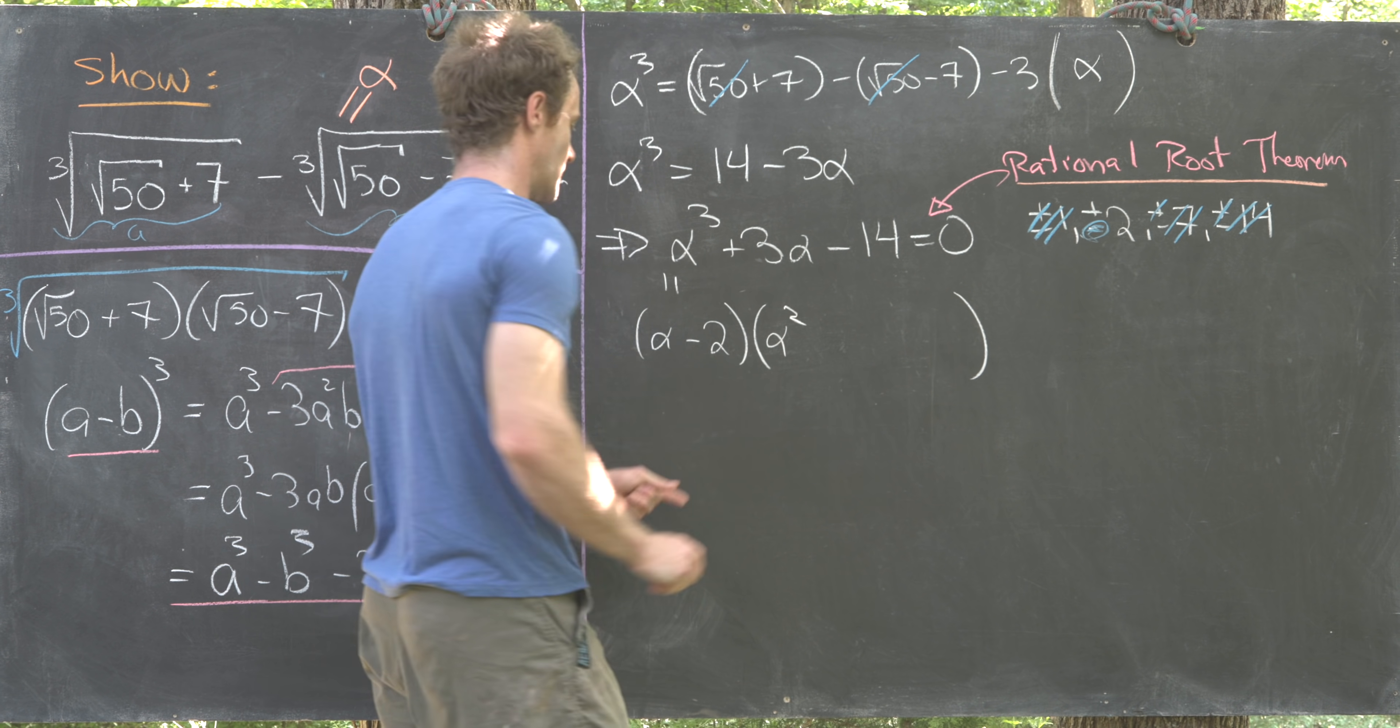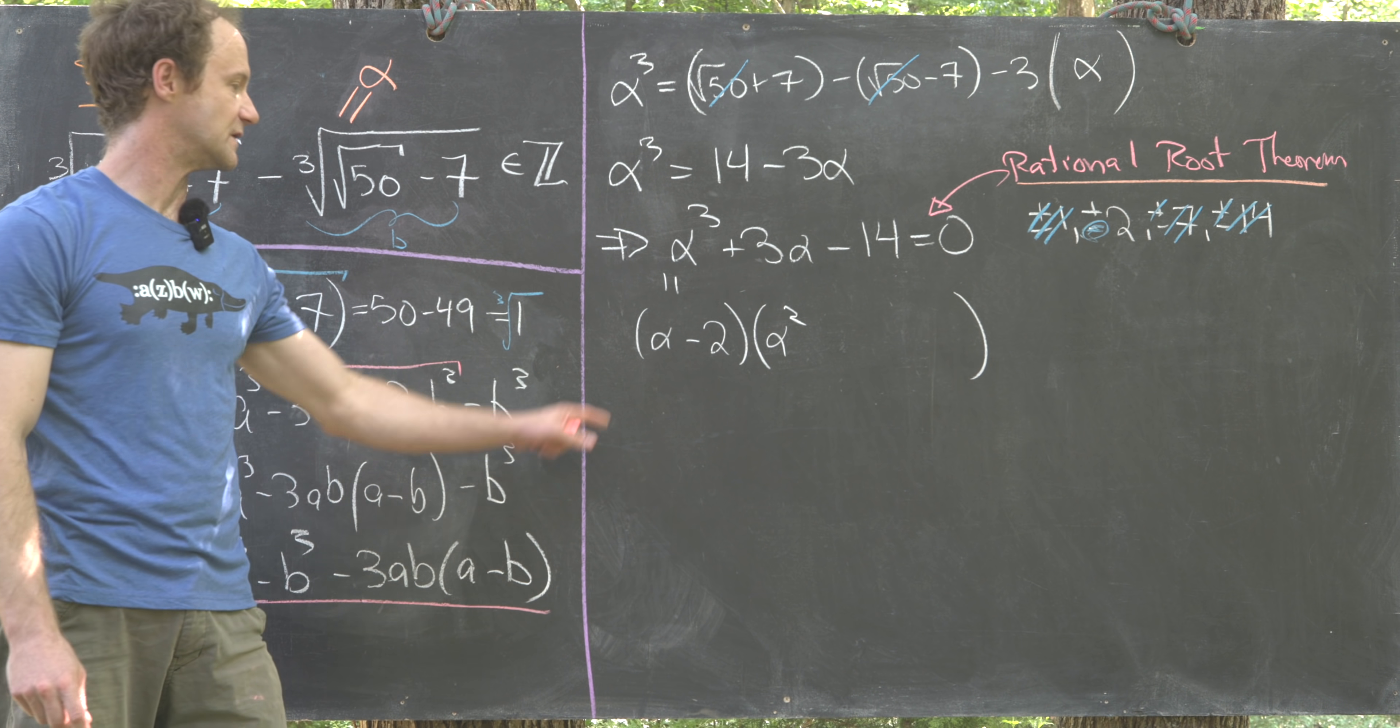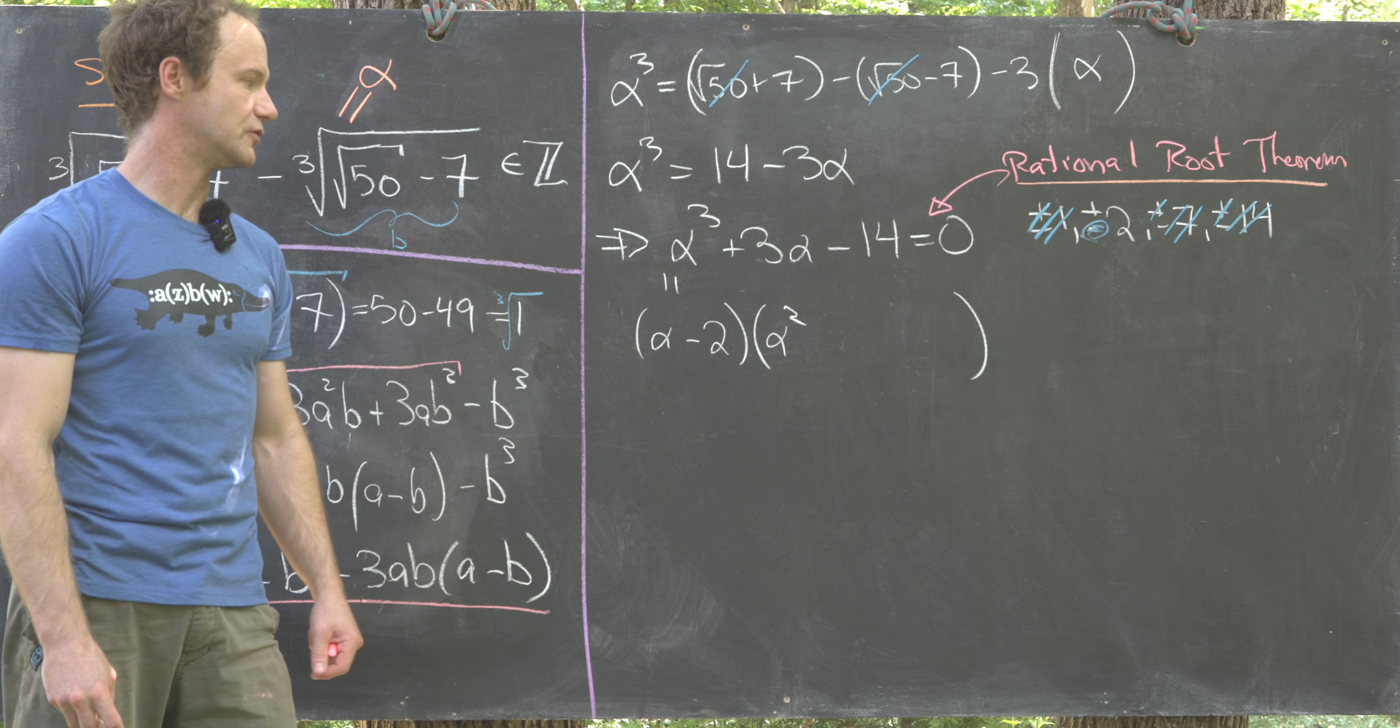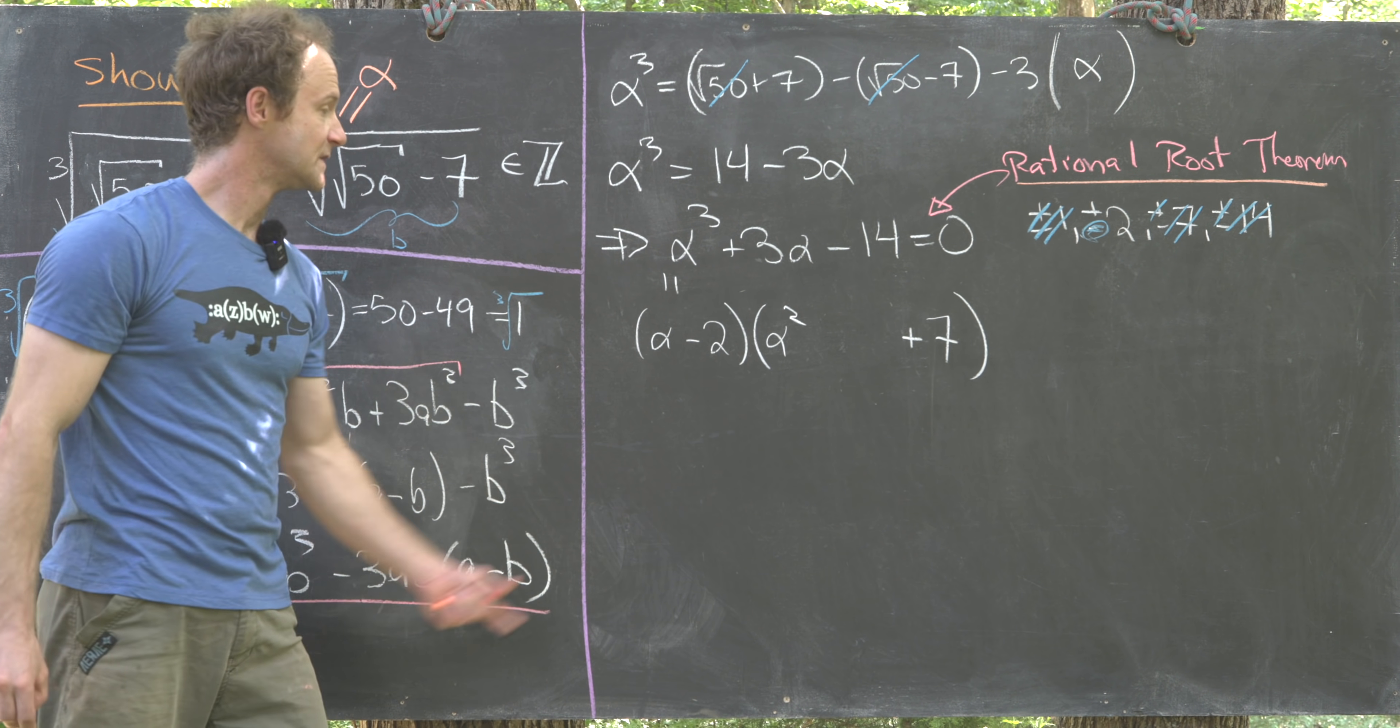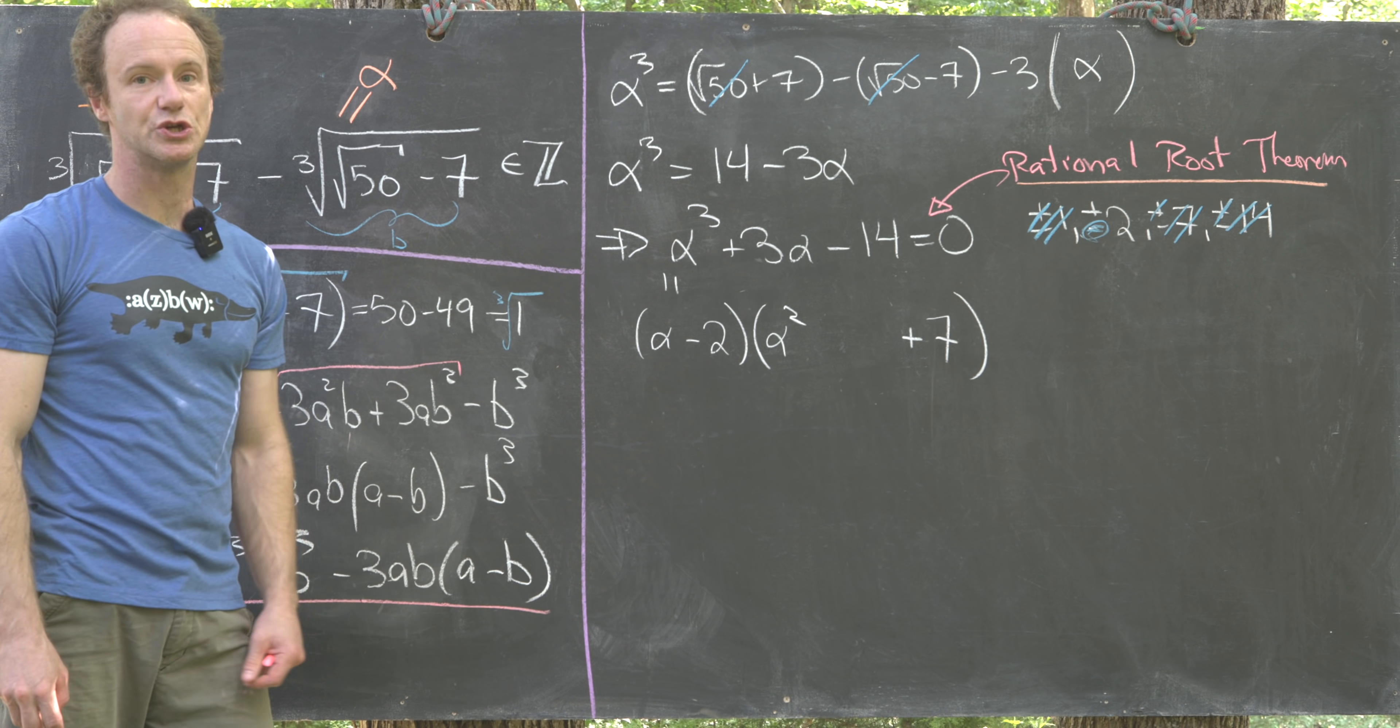Notice we'll have alpha squared. We know the coefficient of alpha squared must be 1 because the coefficient of alpha cubed is 1. Then we know the constant term has to be a positive 7 given the fact that we've got a minus 2 here.